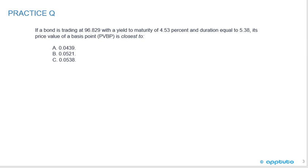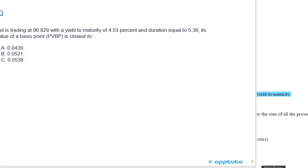Practice question one: if a bond is trading at 96.829 with a yield to maturity of 4.53% and a duration equal to 5.38, its price value of a basis point, PVBP, is closest to A) 0.0439, B) 0.0521, or C) 0.0538.